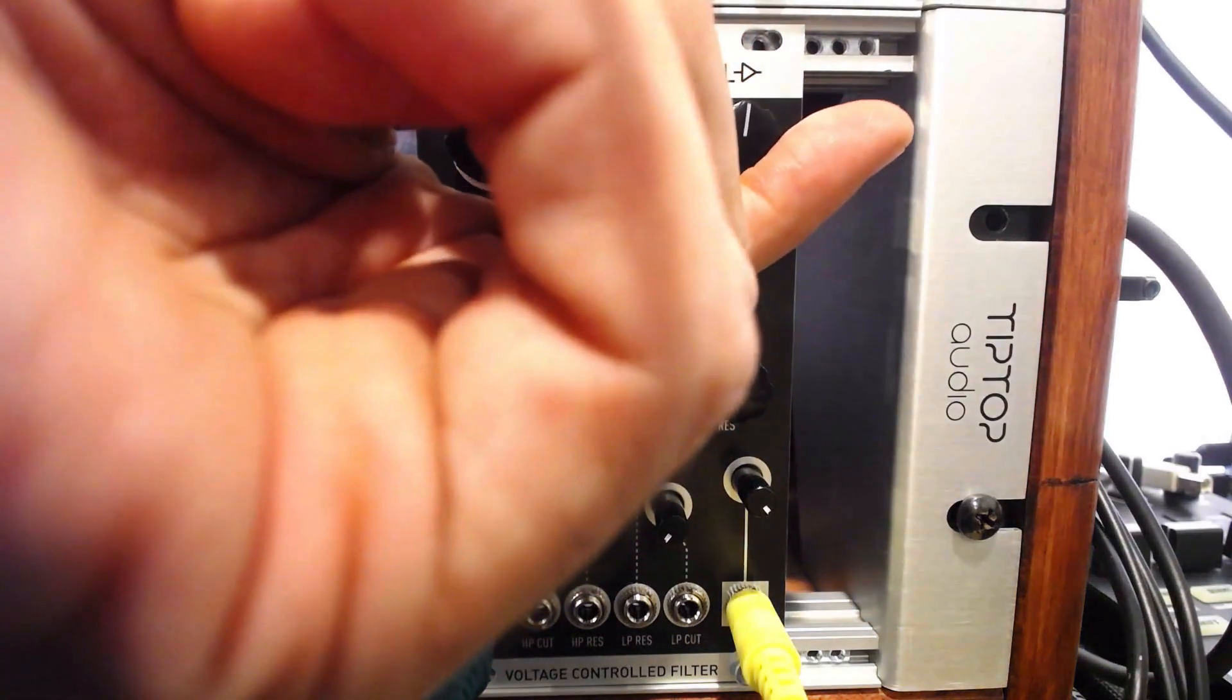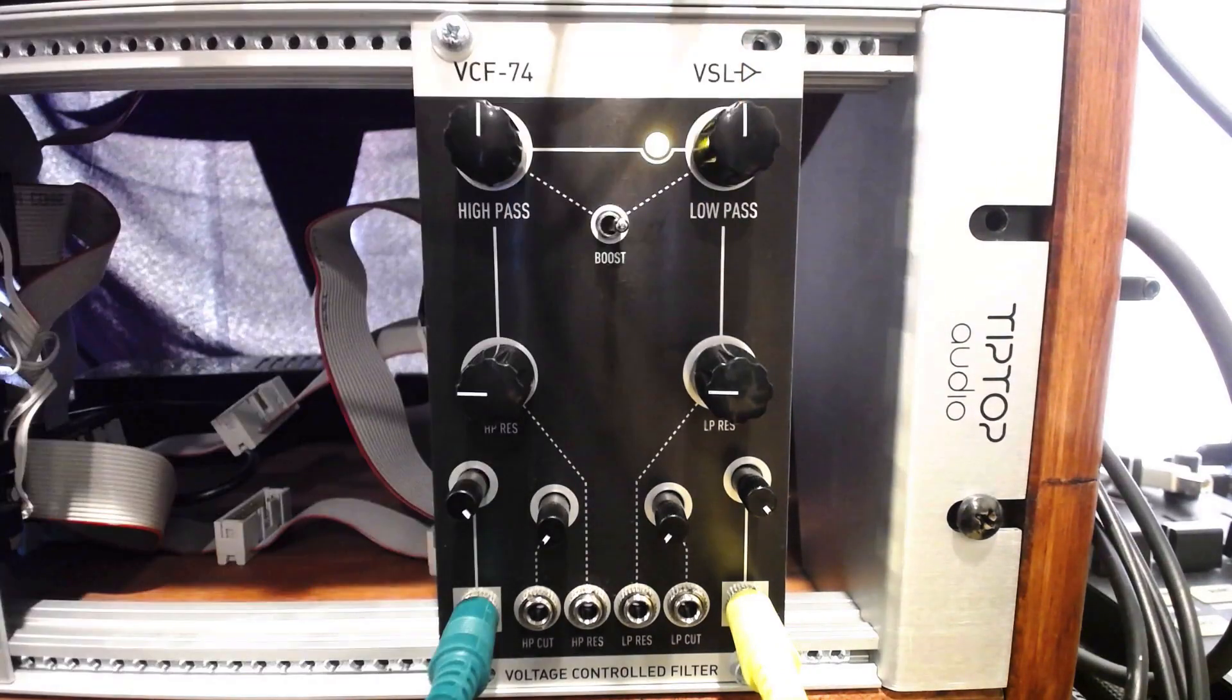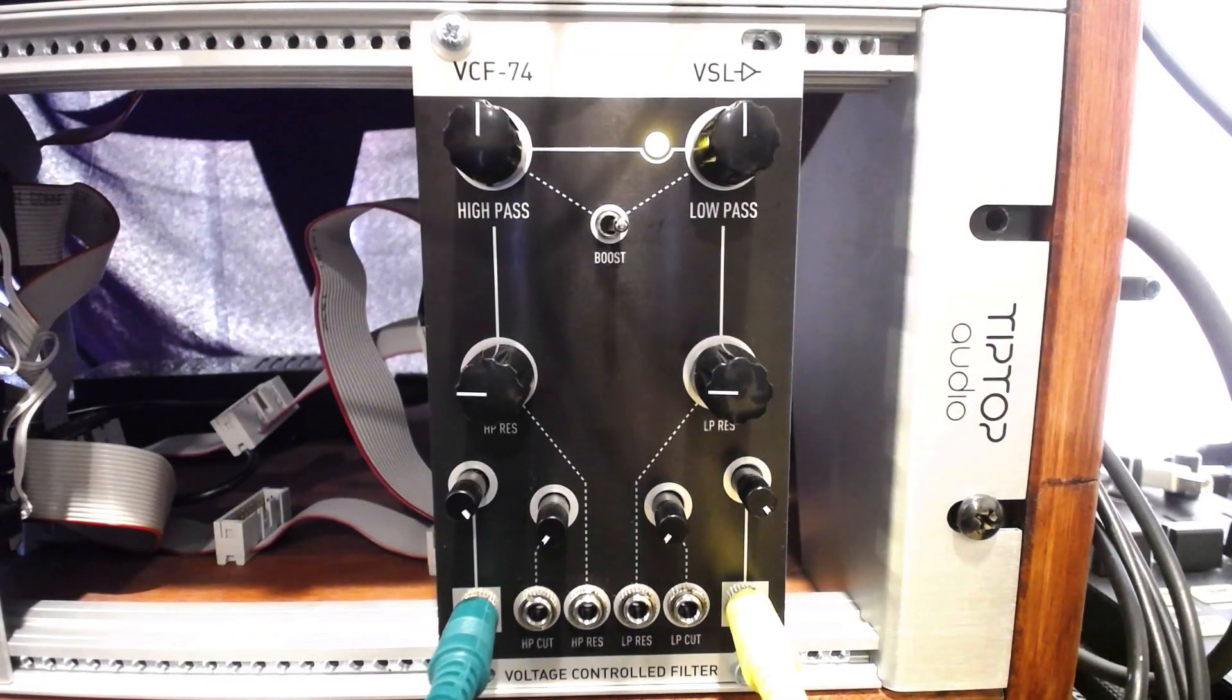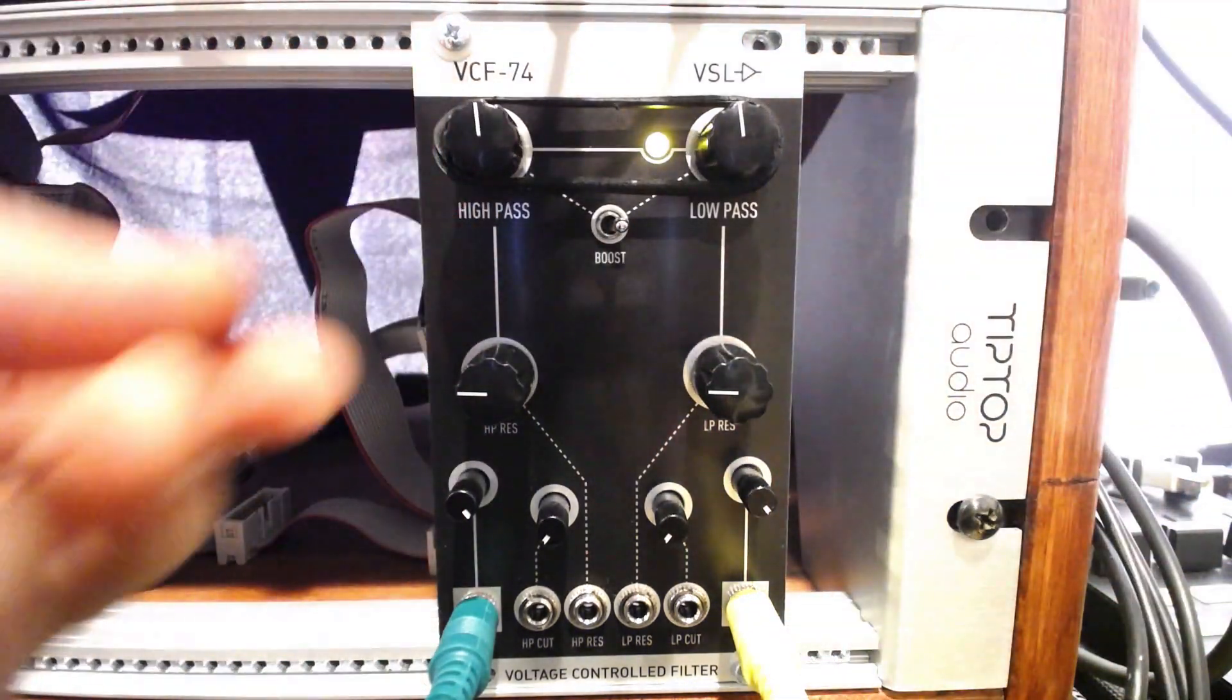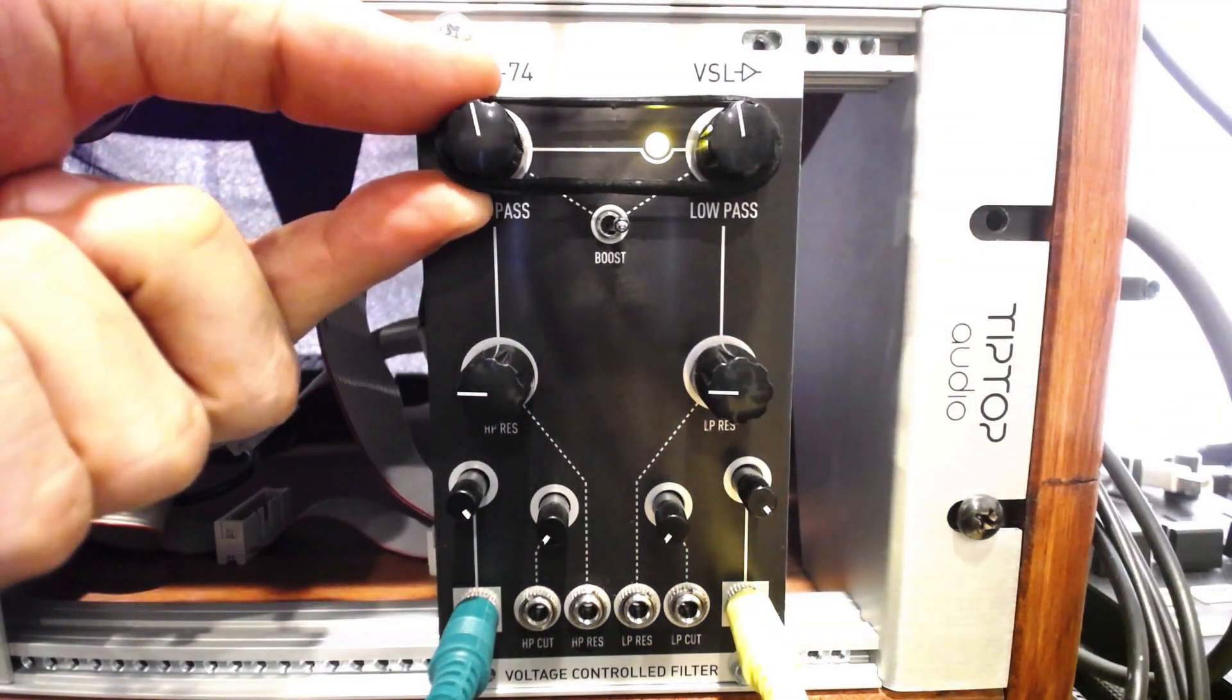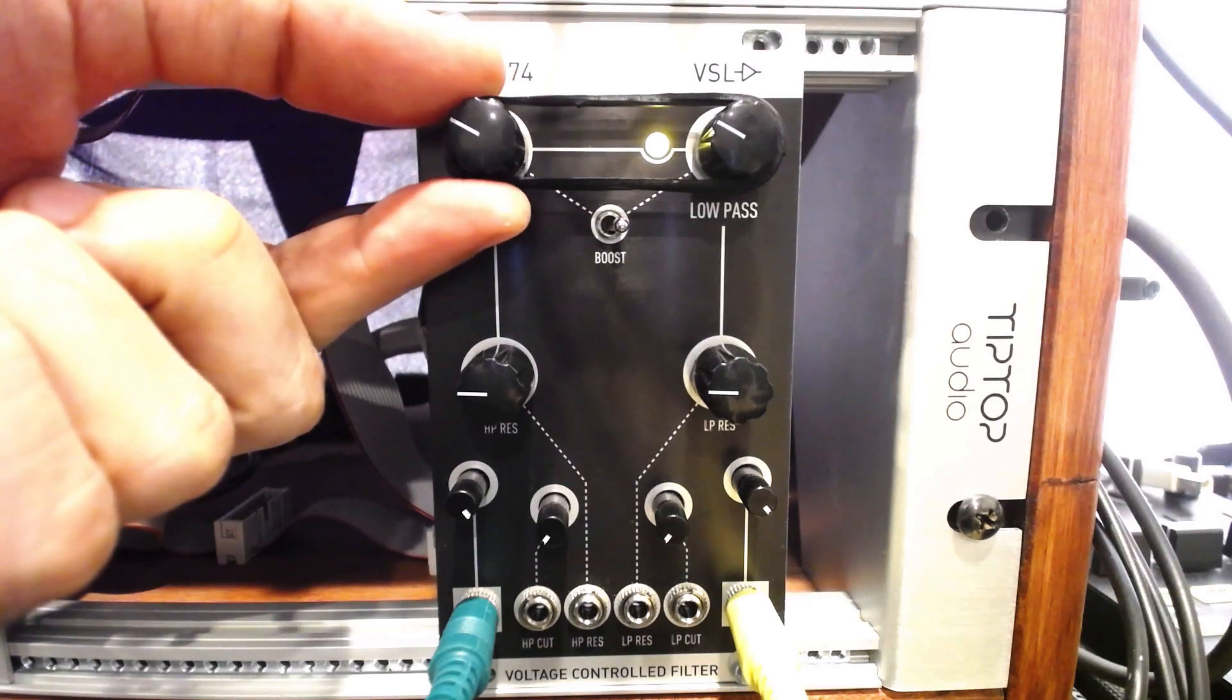We could modulate both filters with the same CV source, but what about manual modulation? I'll string a rubber band around both knobs, making sure the band is tight enough to make contact but not tight enough to put much pressure on the components.